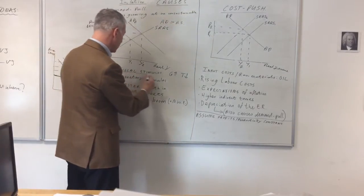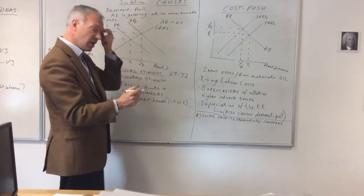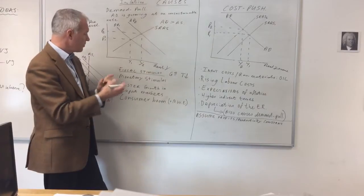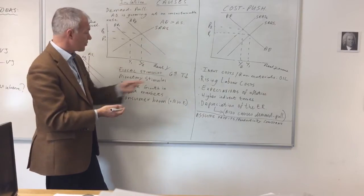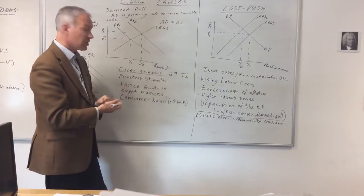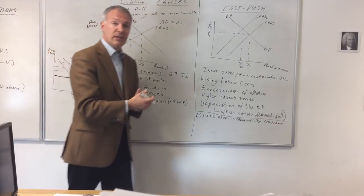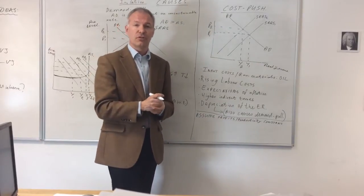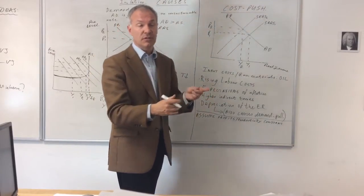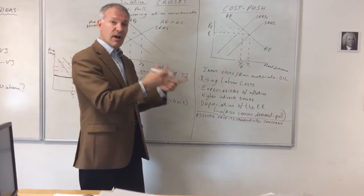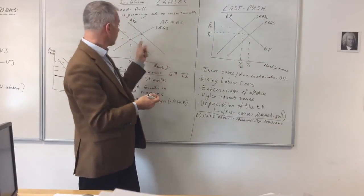Fiscal stimulus occurs when the government makes a mistake in terms of fiscal policy by boosting aggregate demand as a result of increasing government expenditure or reducing taxation. Monetary stimulus could be when the Bank of England reduces interest rates too much, so there's too much borrowing and there's an increase in consumption and probably an increase in investment. Therefore, aggregate demand shifts to the right.